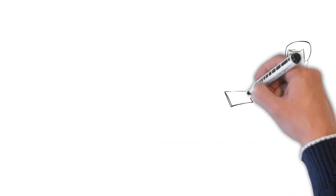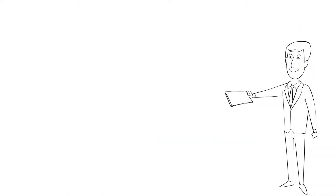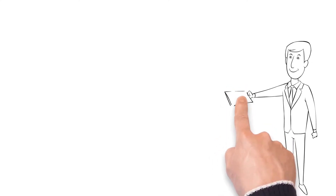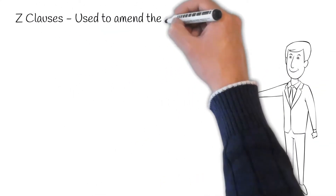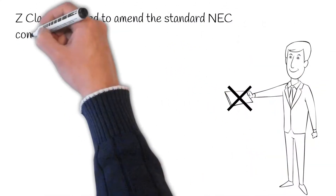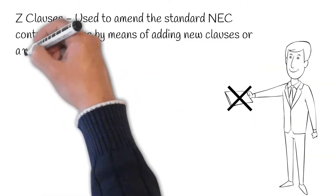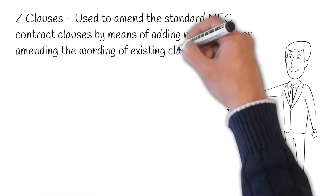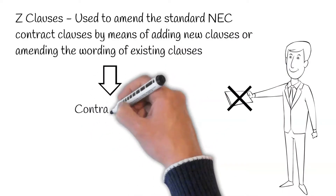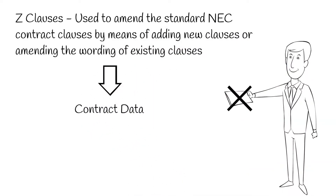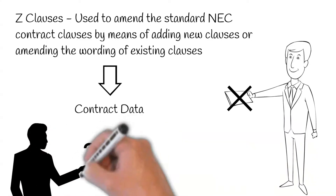Although it's widely recommended to keep the NEC contract as close to a standard text as possible, you'll often find this won't be the case. Z clauses are used to amend the standard NEC contract clauses by means of adding new clauses or amending the wording of existing clauses. They are incorporated through the contract data. But why would someone want to alter the text of such a widely popular contract?